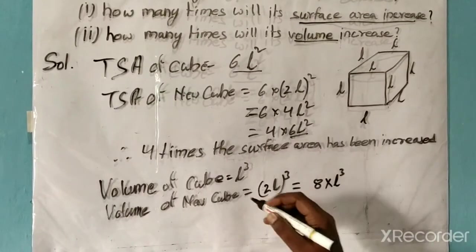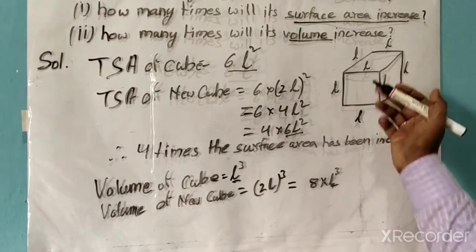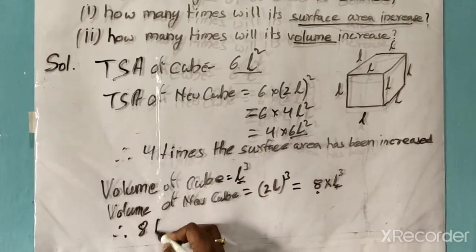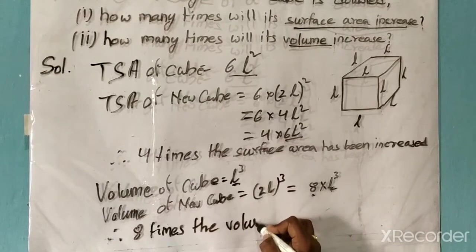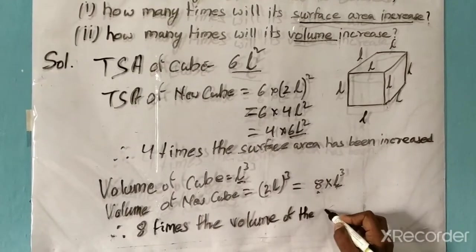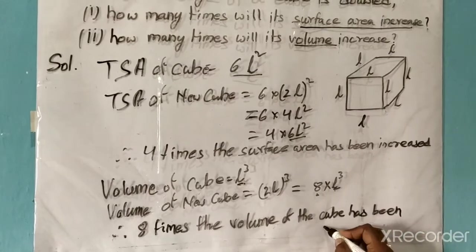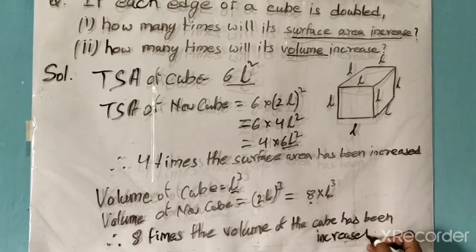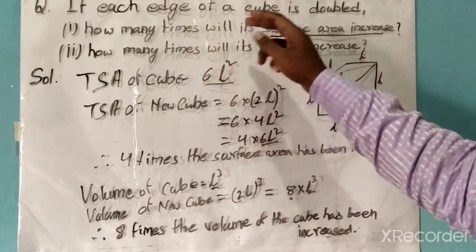(2L) cubed equals 8 times L cubed. Since L cubed equals the original volume, we can see how many times the volume has increased — 8 times. Therefore, the volume of the cube has increased 8 times.